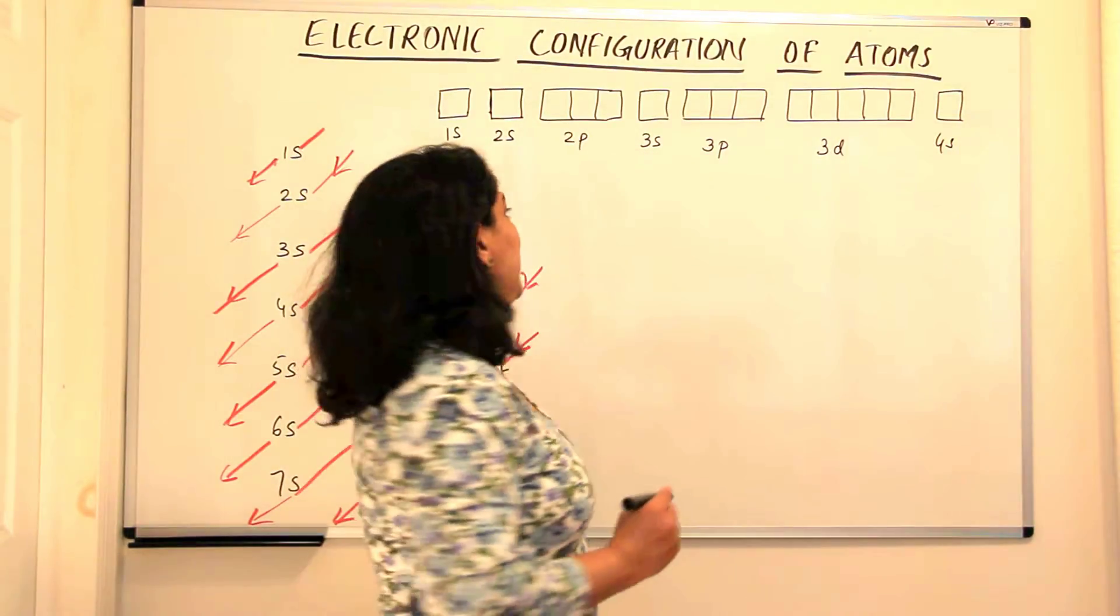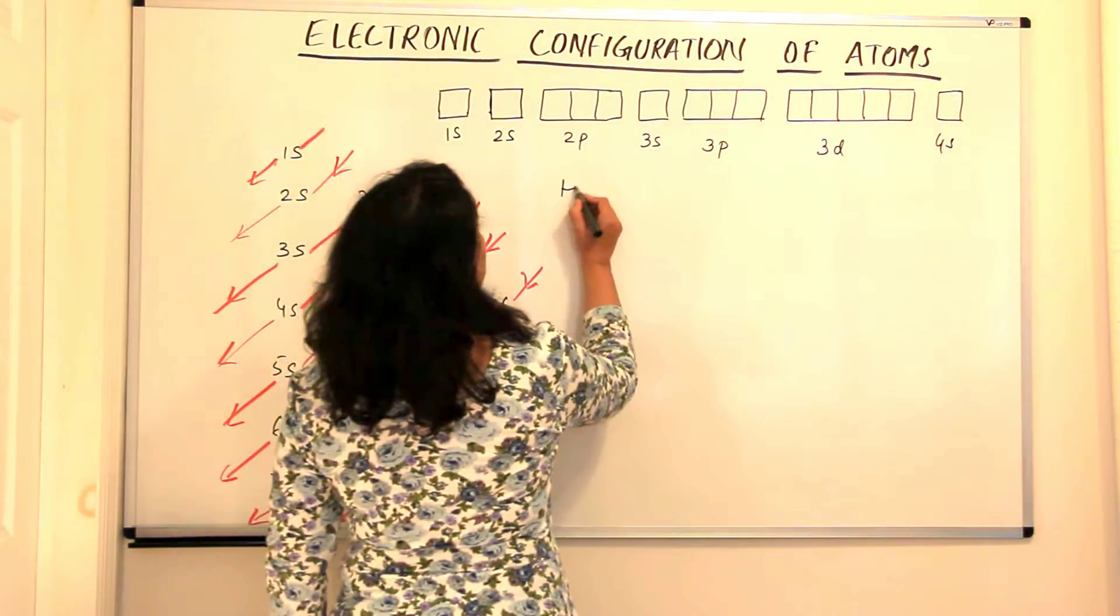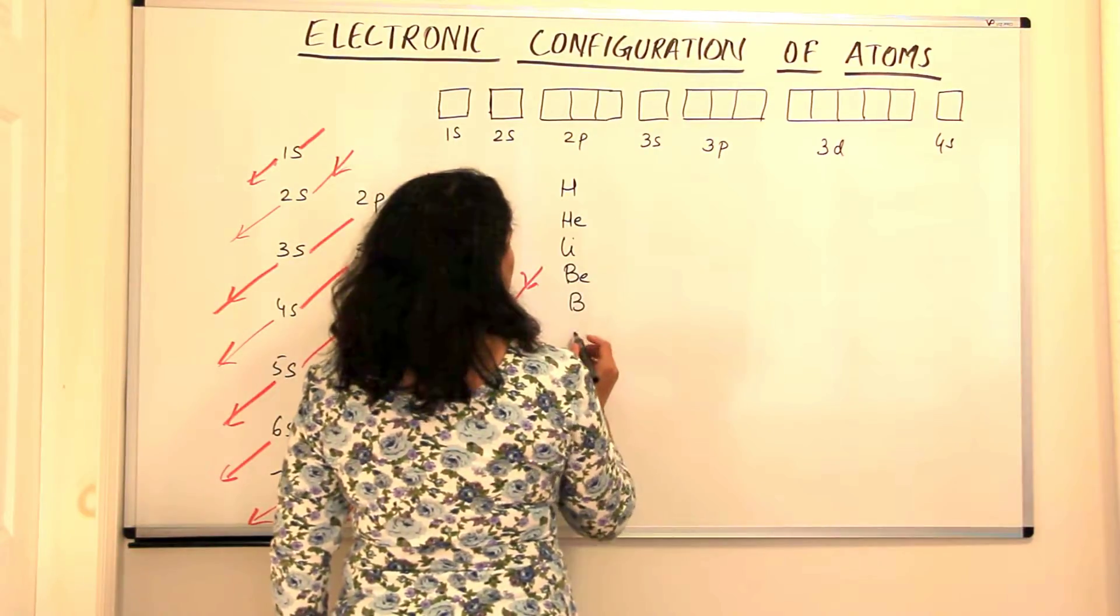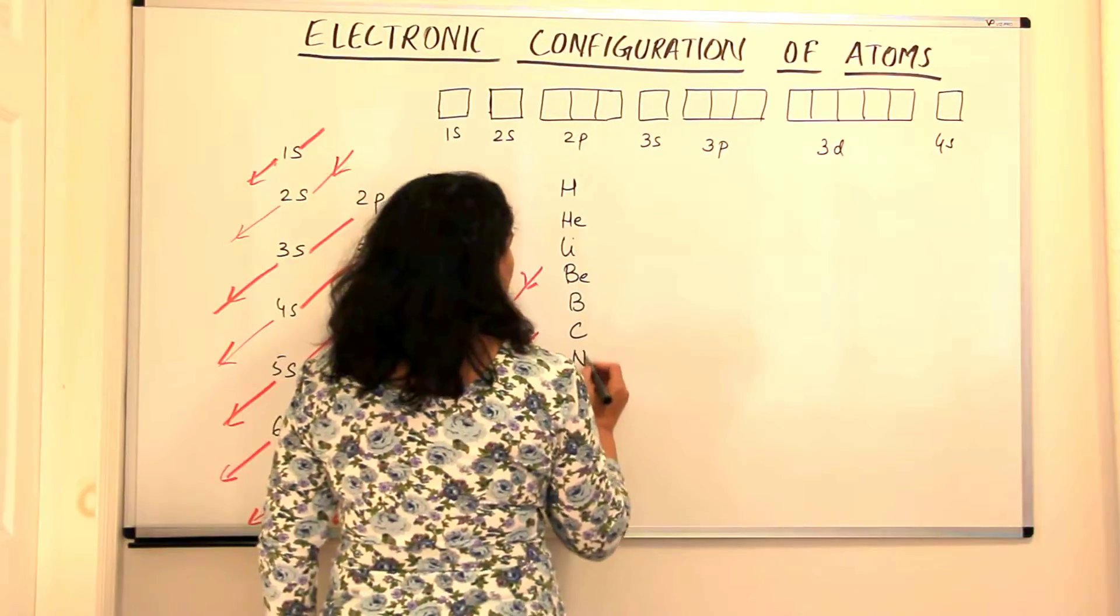So let us first write down these elements. The first 30 elements are hydrogen, helium, lithium, beryllium, boron, carbon, nitrogen, oxygen, fluorine, neon. These are the first 10.